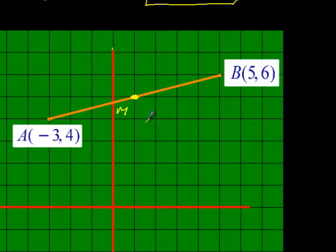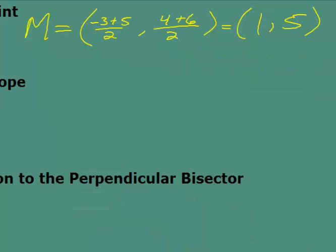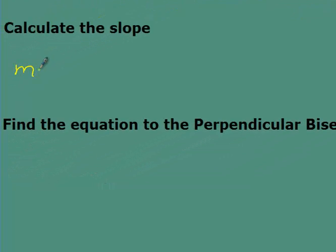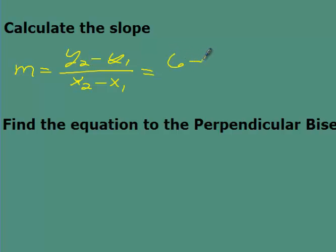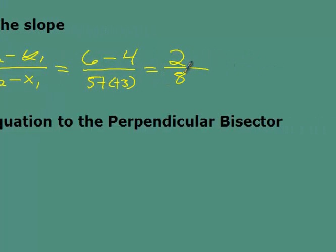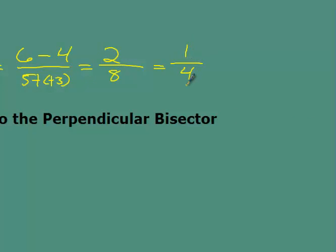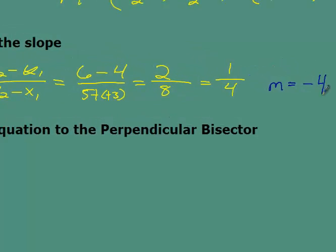Now I have to find the slope of the orange line so I can find the slope of the bisector. Little m equals (y₂ - y₁)/(x₂ - x₁). Plugging in: 6 minus 4 over 5 minus negative 3. That's 2 over 8, which reduces to 1/4. If I want a line perpendicular to this, I need the opposite reciprocal of 1/4. The opposite of positive is negative, and the reciprocal of 1/4 is 4. So the slope of the bisector is negative 4.